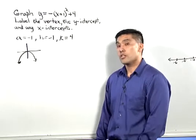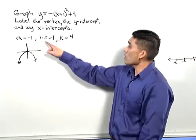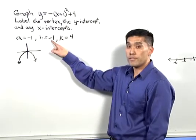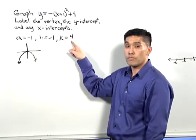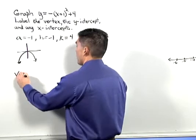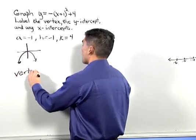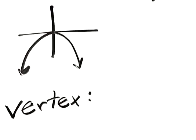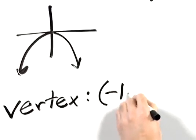Moreover, because of the translations, a horizontal translation one unit to the left and a vertical translation four units up, I know the vertex. The vertex is going to be the point negative 1, 4.